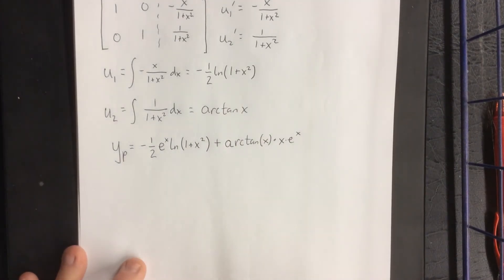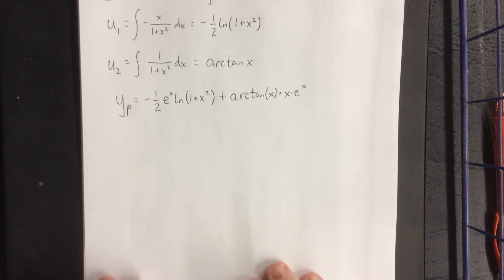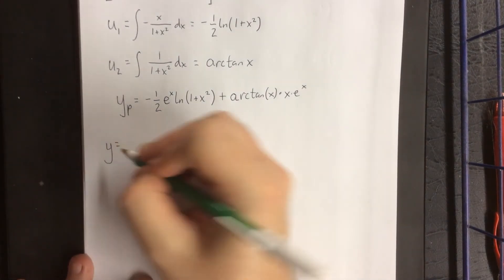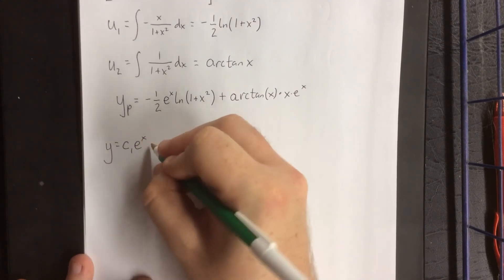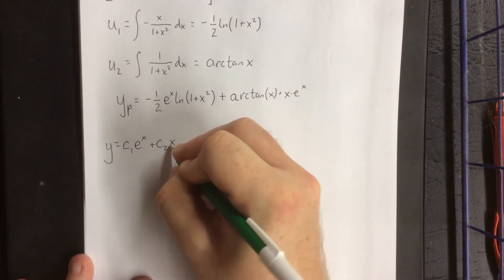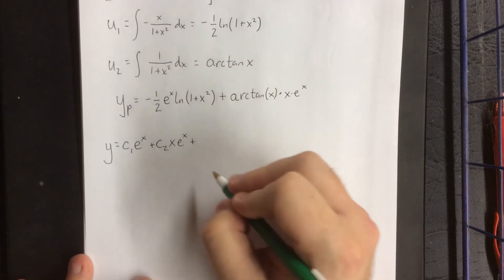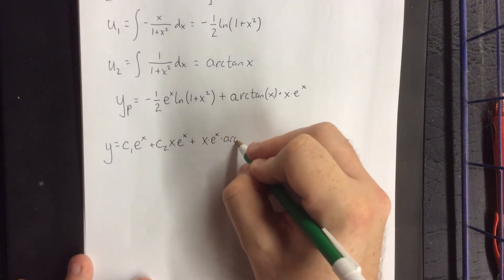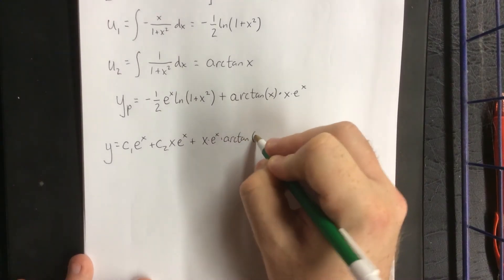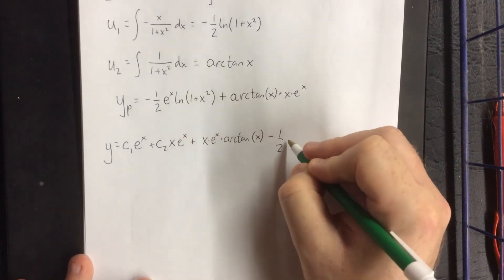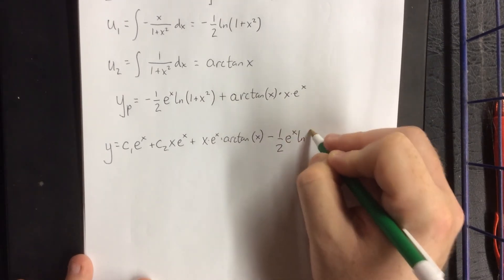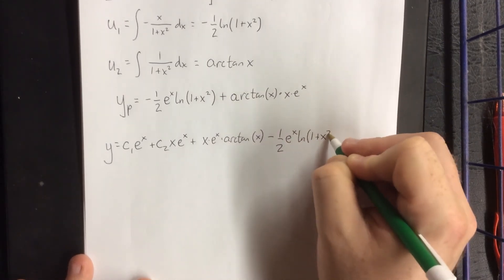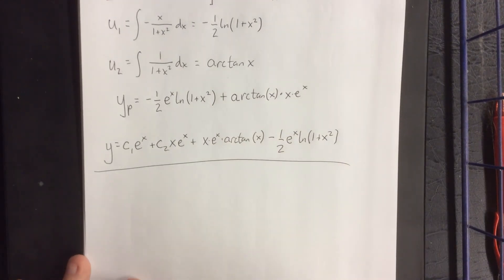Writing down the complementary solution plus the particular solution gives us our general solution. The general solution will be our complementary solution from the first page plus our particular solution — negative one-half natural log of 1 plus x squared times e to the x, plus arctangent of x times xe to the x — combined with c1 e to the x plus c2 xe to the x. There's our general solution for the original differential equation. I hope you enjoyed and I'll see you in videos soon.